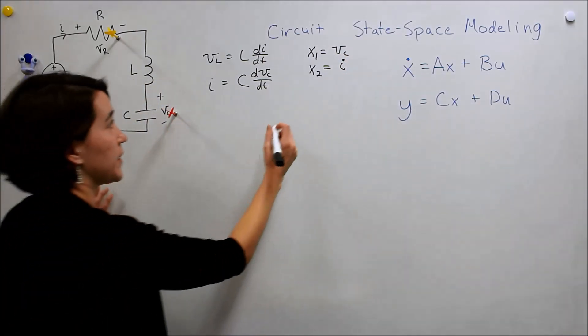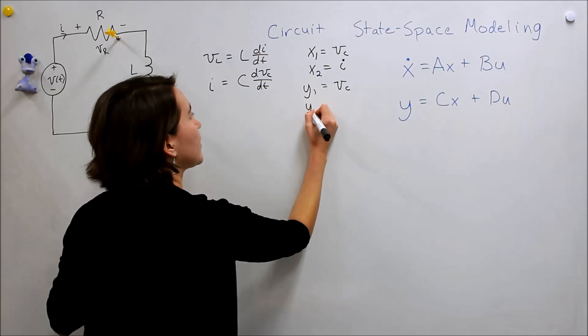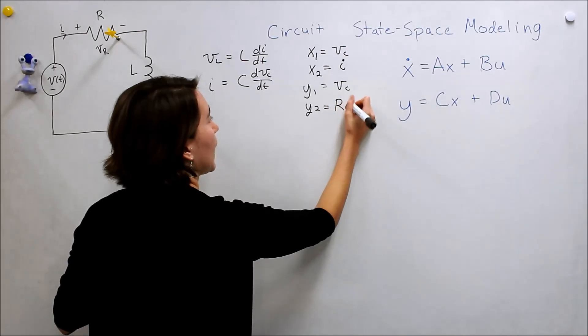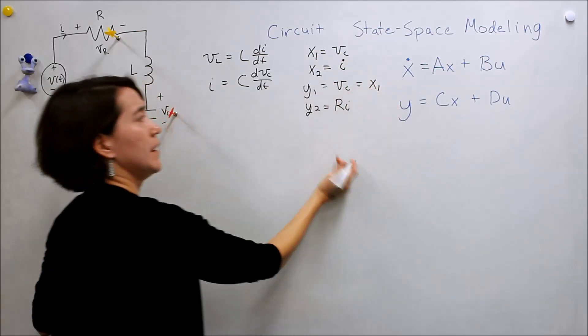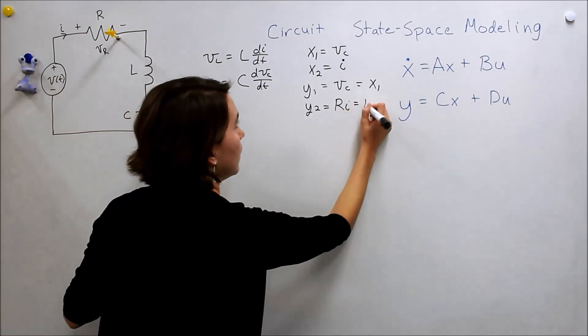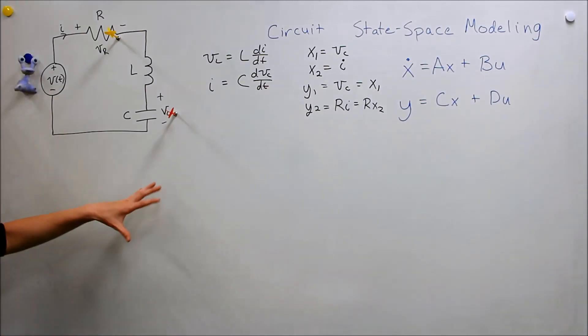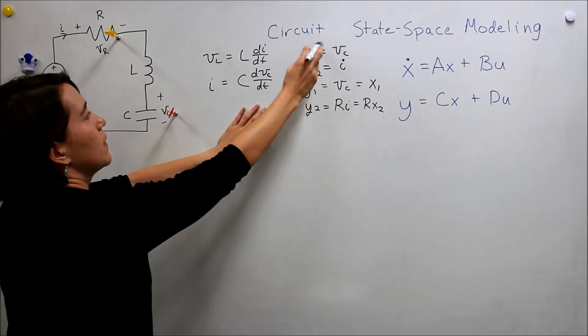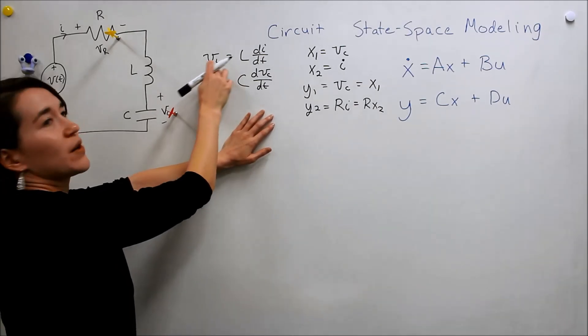And remember our output, so let's just write them here now. We're going to have Y1, that's going to be VC, and our Y2 is going to be the current times R, so it's going to be RI. If we change this into our state space, VC is just X1, and RI would be R times X2. So we've got all our main definitions. These so far are all in our state, VC and I. We have this VL as well, so we actually need to find a new equation for VL.